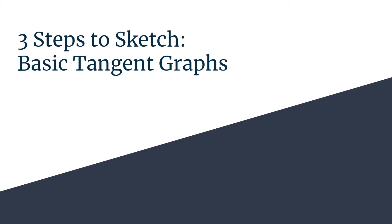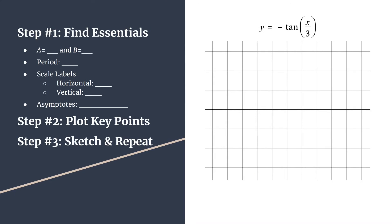This is three steps to sketch the basic tangent graph y equals negative tangent of x over 3. A quick summary of our three steps: First, we'll find the essentials to get everything set up. Second, we'll plot our key points in the pattern point, point, asymptote, point. We'll sketch out that cycle and then we'll repeat for as many cycles as we want.